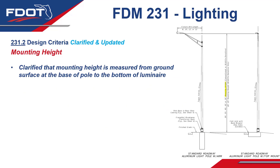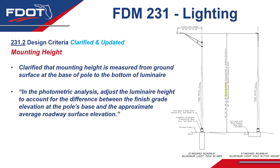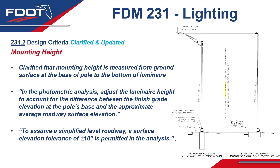Next up is the new mounting height heading, where it's clarified that mounting height is measured from the ground surface at the base of the pole to the bottom of the luminaire. In the photometric analysis, adjust the luminaire height to account for the difference between the finish grade elevation at the pole's base and the approximate average roadway surface elevation. To give some leeway and keep things simple, the FDM states to assume a simplified level roadway — a surface elevation tolerance of plus or minus 18 inches is permitted in the analysis, which should account for most cross slopes without needing to model them in the software.